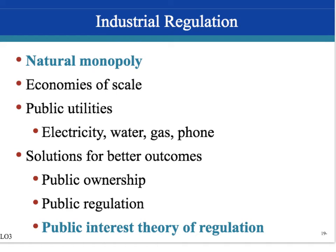Industrial regulation is meant to prevent a monopoly from engaging in abusive practices. In the case of a natural monopoly, one exists when there are economies of scale — when one firm can service the market at a lower average total cost than several firms can. The government allows natural monopolies because they are good for consumers. Public utilities such as electricity, water, gas, and phone are natural monopolies, and the government allows them to operate as a monopoly as long as it has a say in their prices, to prevent them from charging exorbitant prices on goods with very inelastic demand, like water.